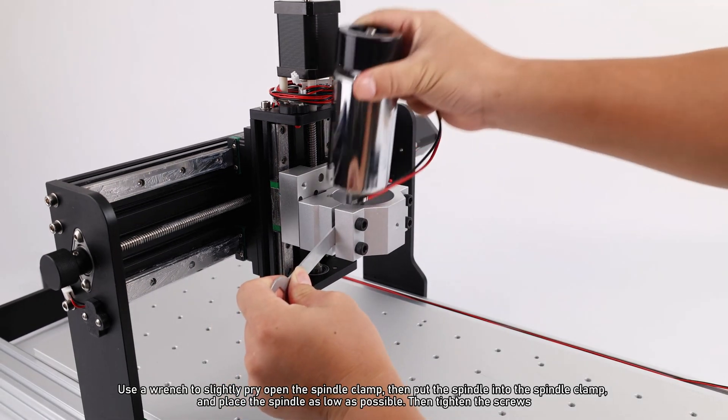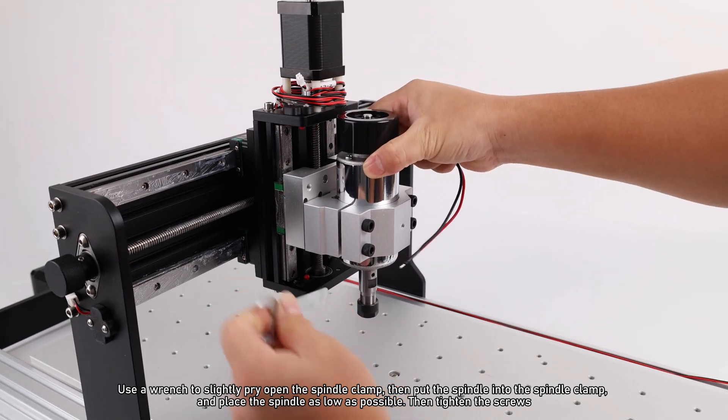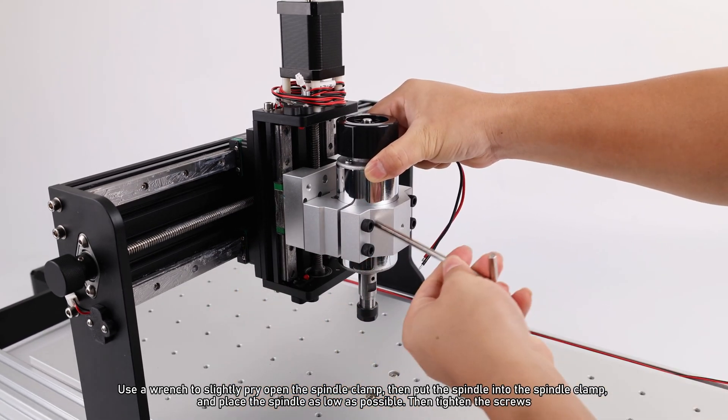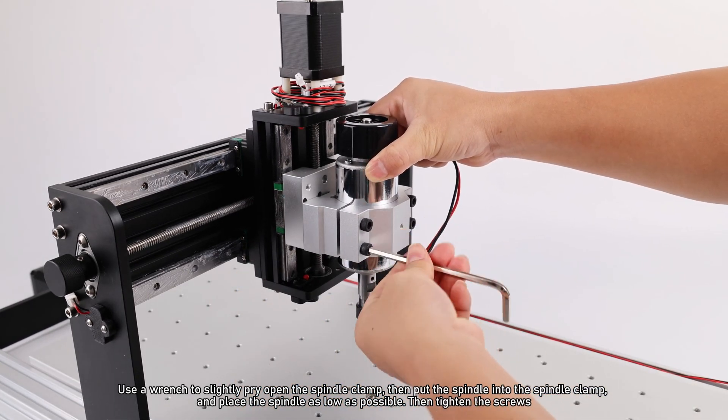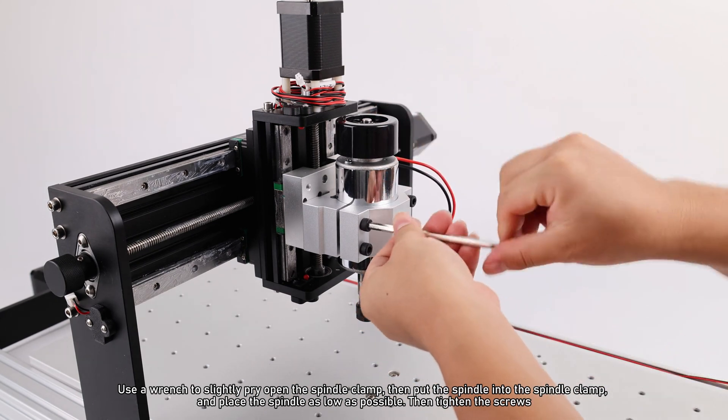Use a wrench to slightly pry open the spindle clamp then put the spindle into the spindle clamp and place the spindle as low as possible. Then tighten the screws.